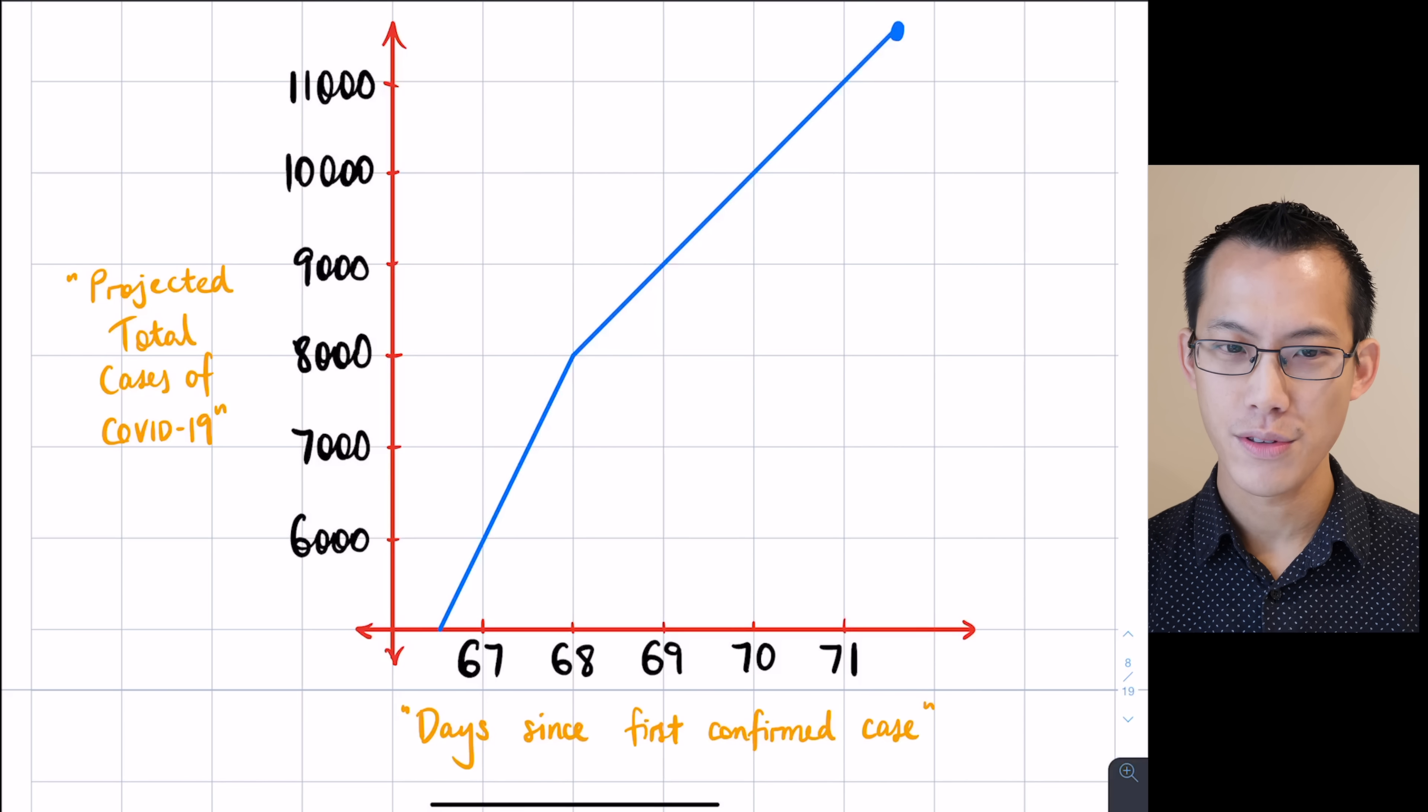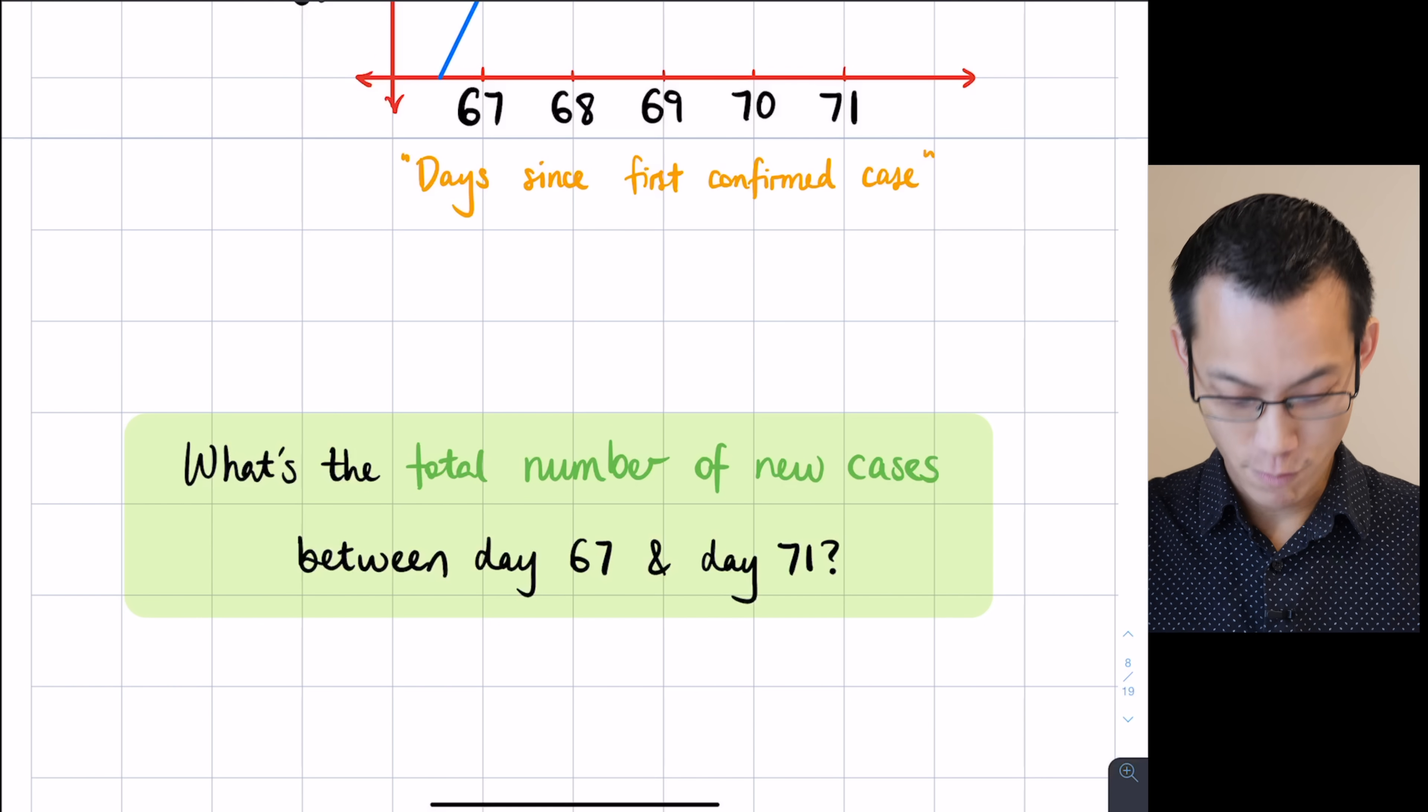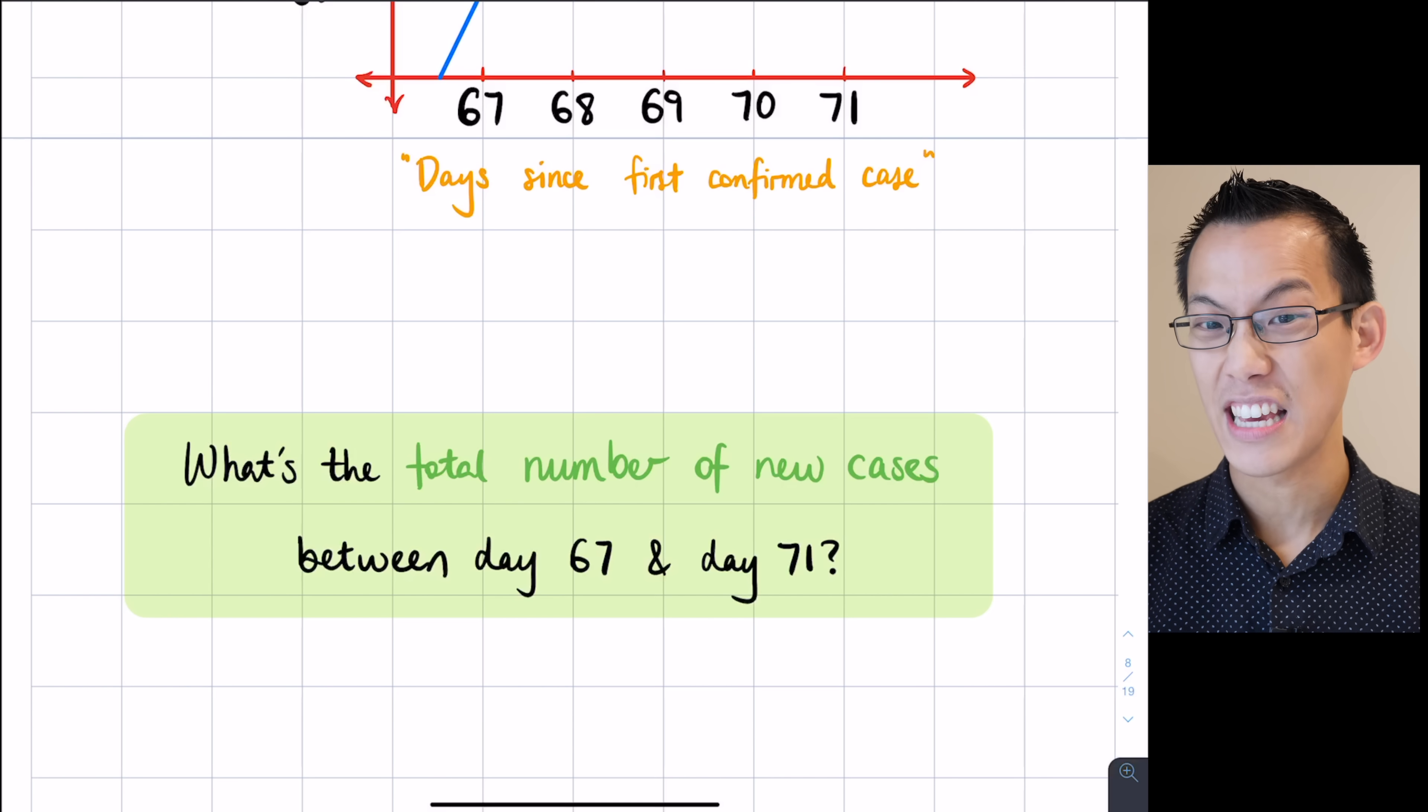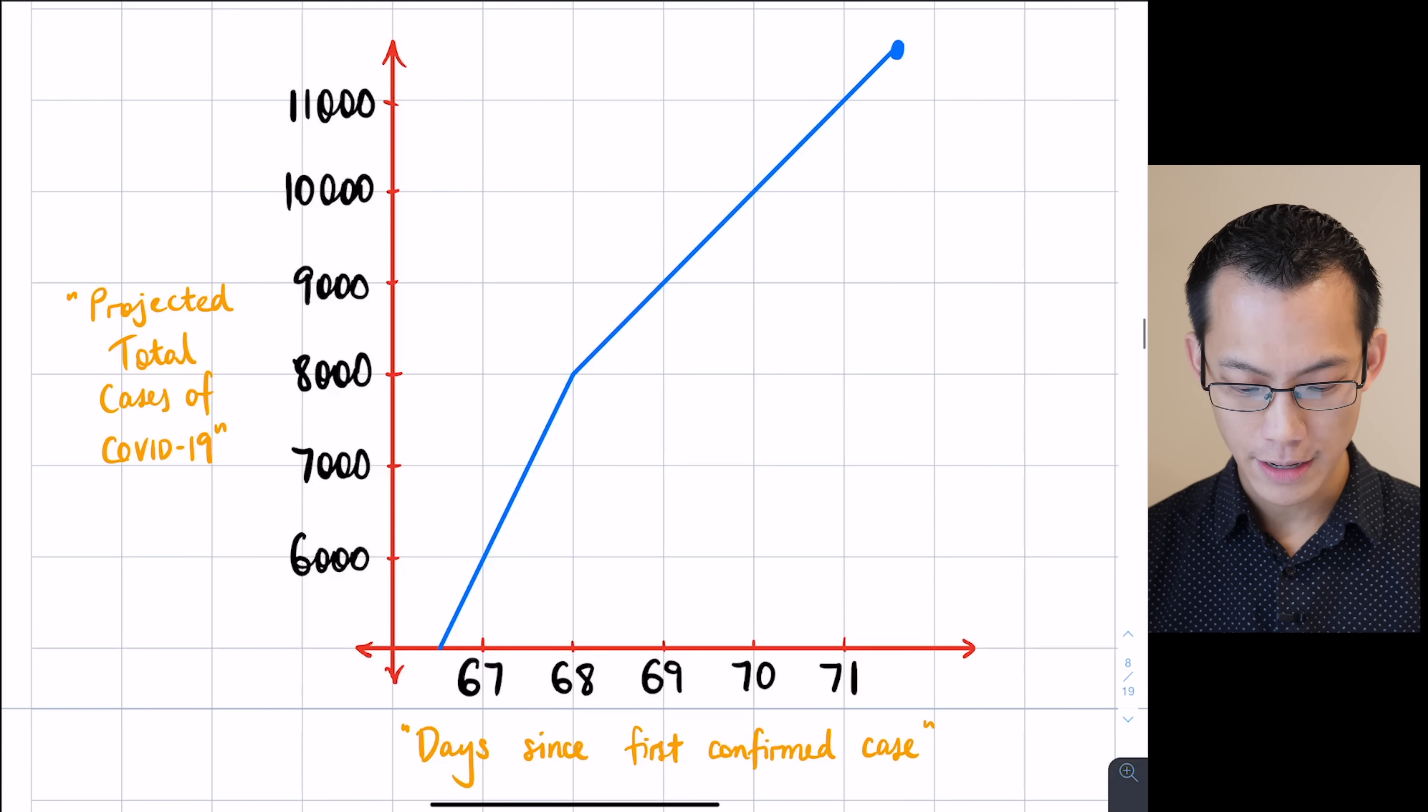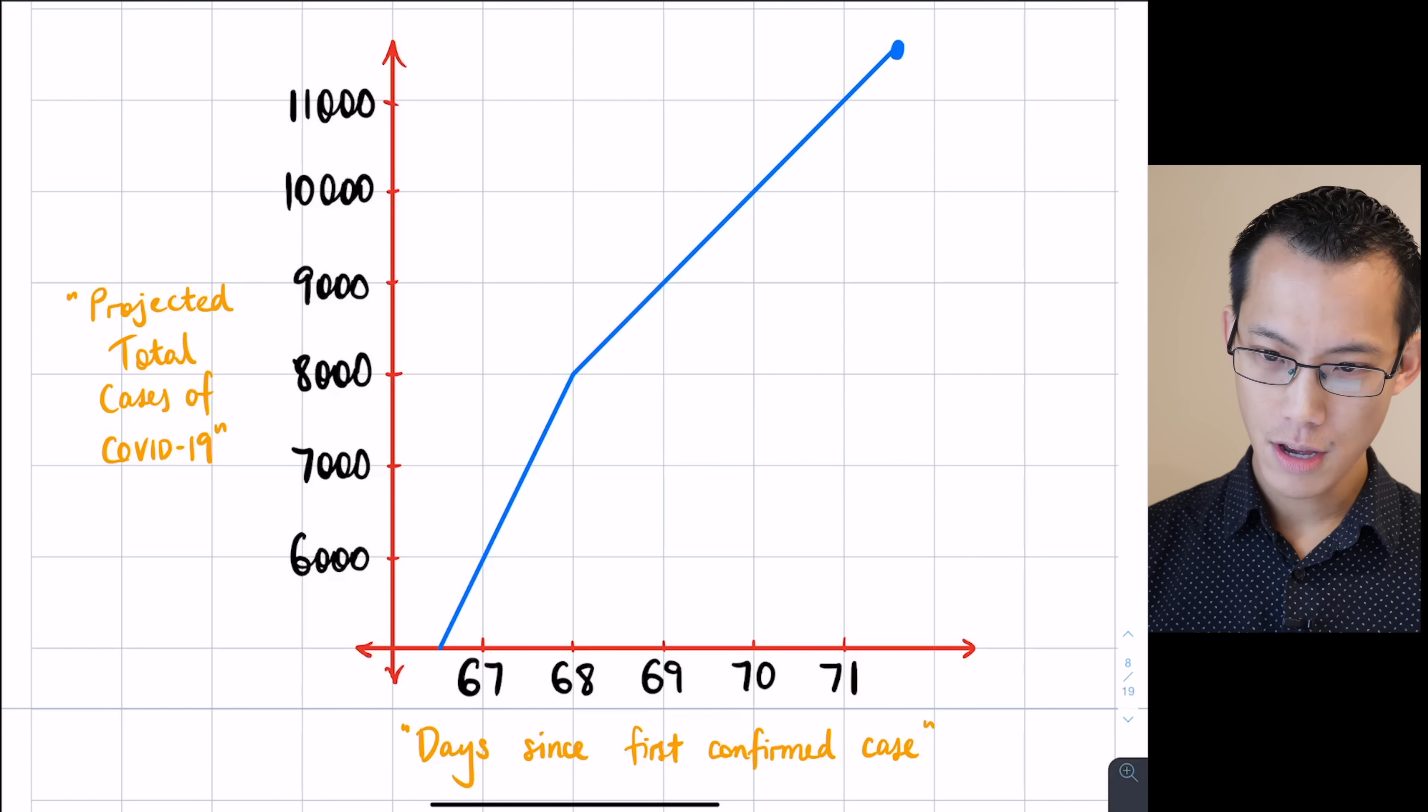And I kind of want to guide us through this by having to think about a very simple and foundational question, as the name kind of suggests. And that is, what's the total number of new cases on the basis of this graph, which we'll interpret together, between now, which I'm just going to call day 67, and some future time, like say day 71, that's visible on my graph. What's the total number of new cases in that limited period of time? Well, let's have a look at this graph. And it isn't all that dissimilar to the kinds of graphs you actually have been seeing thrown around the news. How would we answer that question about the total number of new cases? How would we answer that on the basis of this graph?